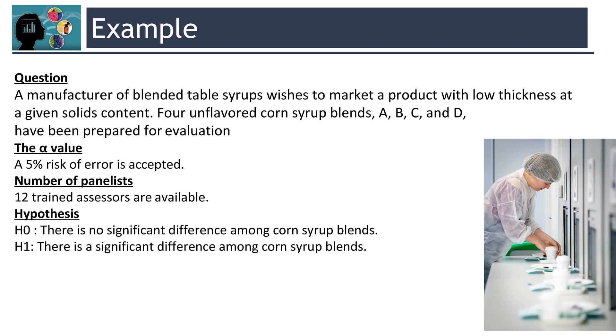The alpha value is 5% and 12 trained panelists are available. Hypothesis: H0 is there is no significant difference among corn syrup blends and H1 is there is a significant difference among corn syrup blends.